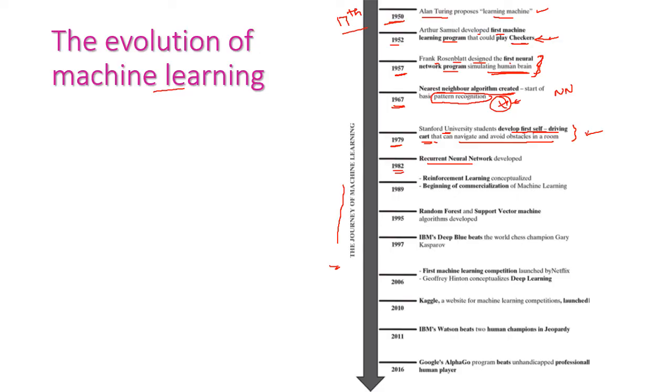In the year 1989, reinforcement learning was introduced, and this is the beginning of commercialization of machine learning. In the year 1995, the random forest and support vector machine algorithms were developed. Those are very popular algorithms in supervised learning. After that, in the year 1997, IBM introduced Deep Blue. These, after this only, the machine learning became very popular in the world.